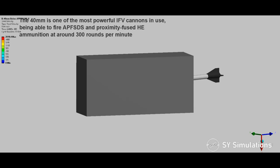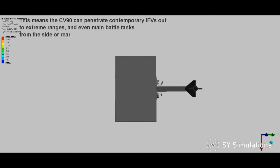The 40mm is one of the most powerful IFV cannons in use, being able to fire APFSDS and proximity-fused HE ammunition at around 300 rounds per minute. This means the CV-90 can penetrate contemporary IFVs out to extreme ranges, and even main battle tanks from the side or rear.